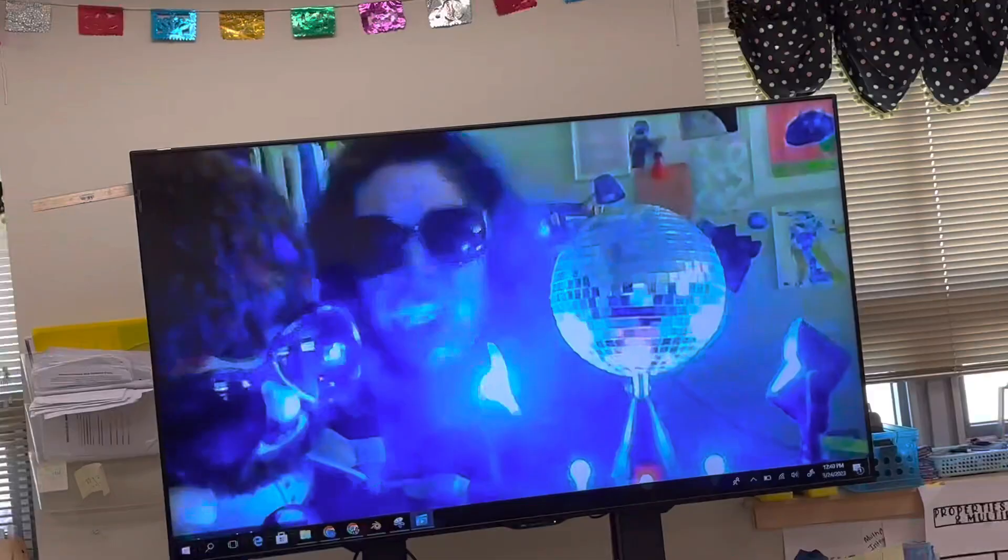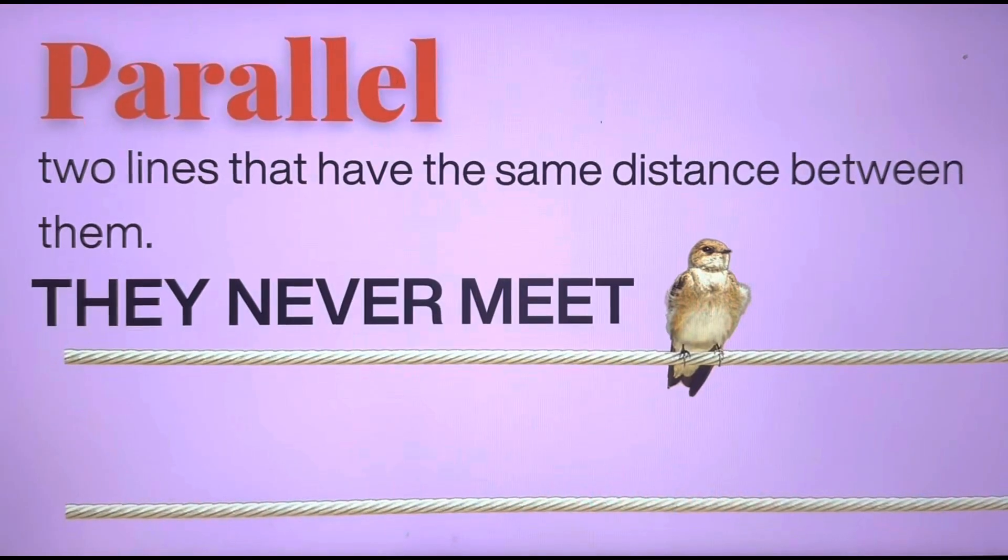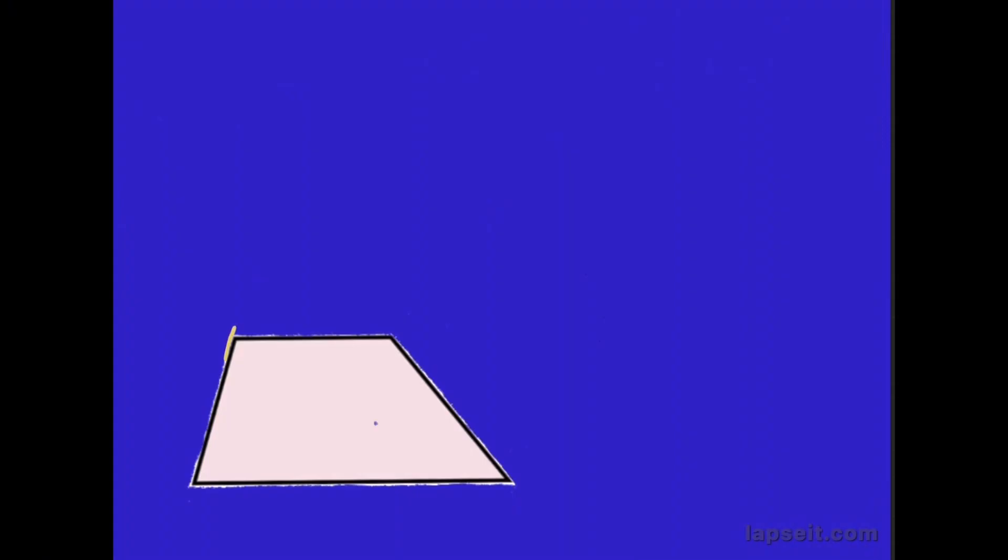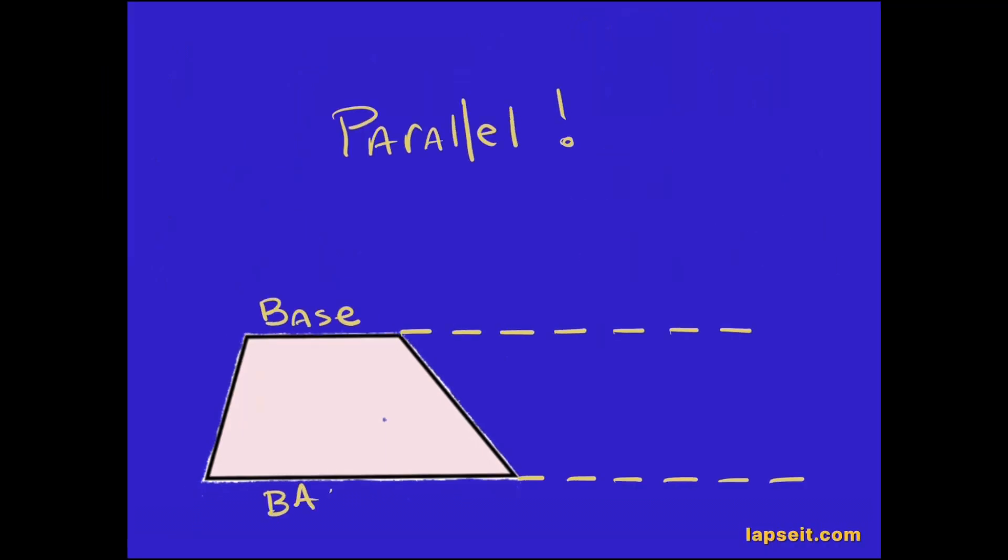Before we get going, there's something you should know. The bases of the trapezoid are the ones that are parallel. Oh, so when you say bases in a trapezoid, you mean the two parallel lines. Okay.